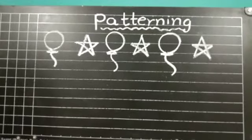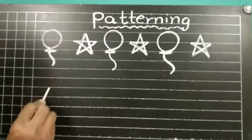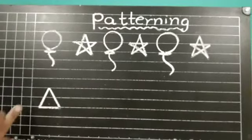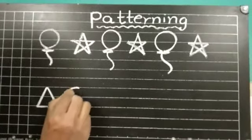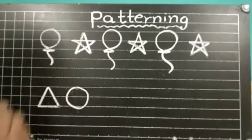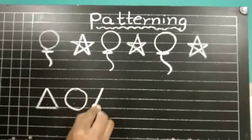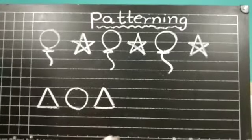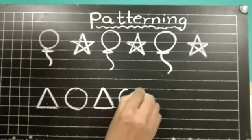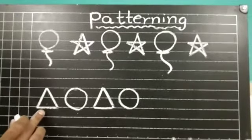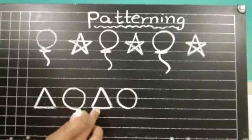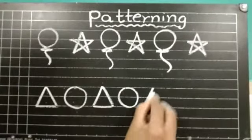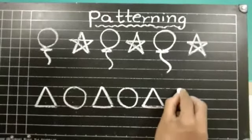Then, we will see one more example. Do you know children which shape is this? Yes, this is a triangle. Yes, this is a triangle. And this is a circle. Triangle and circle. Say triangle, circle. Triangle, circle. So, what will come next? Next, triangle, circle.